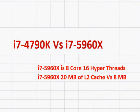Let's compare the Intel Core i7-4790K with the i7-5960X. Basically both of them are the topmost desktop processors available as of September 2014.